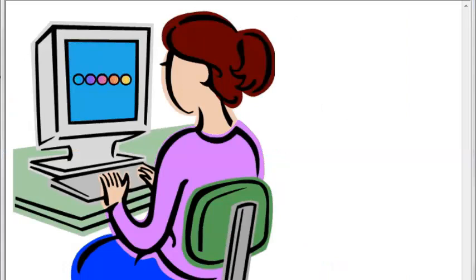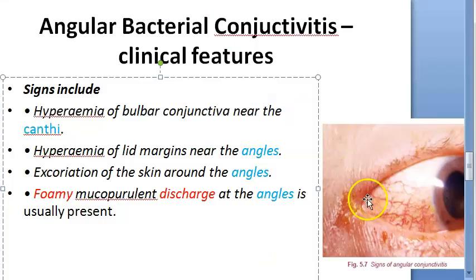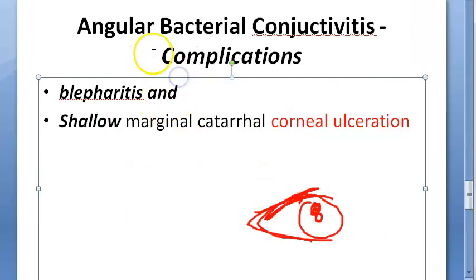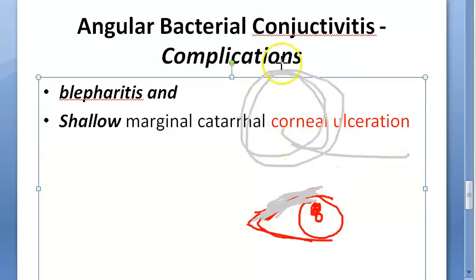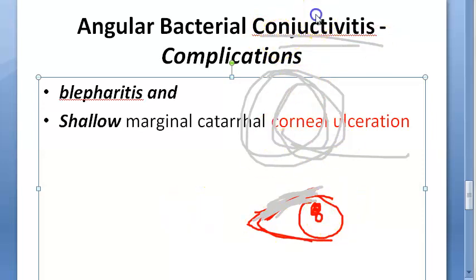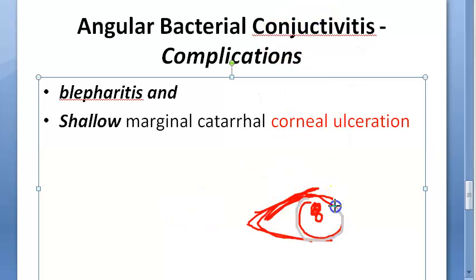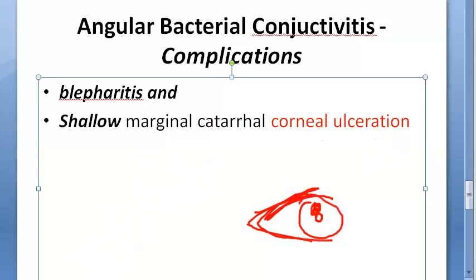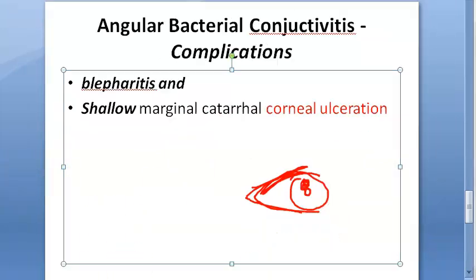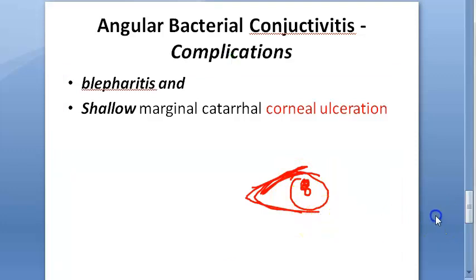The complications of untreated angular bacterial conjunctivitis include blepharitis, which is inflammation of the eyelid, and corneal ulceration. The infection spreads from the conjunctiva to the cornea, causing a shallow marginal catarrhal corneal ulceration. So complications involve both the eyelids and the cornea.